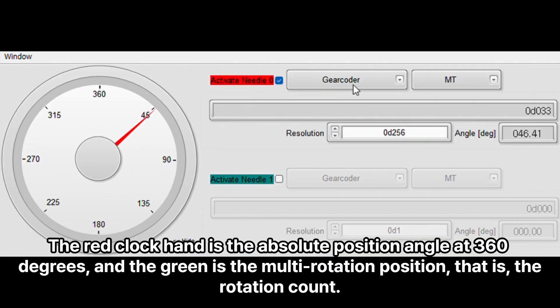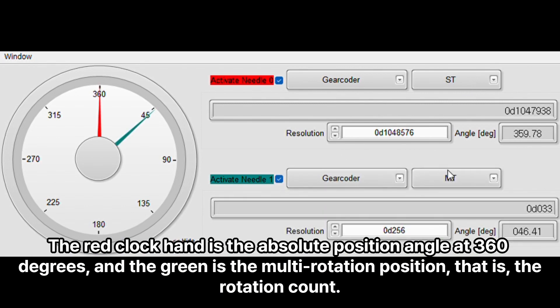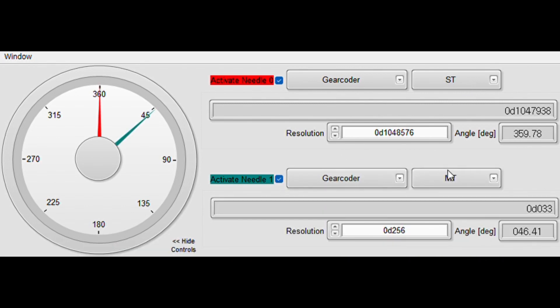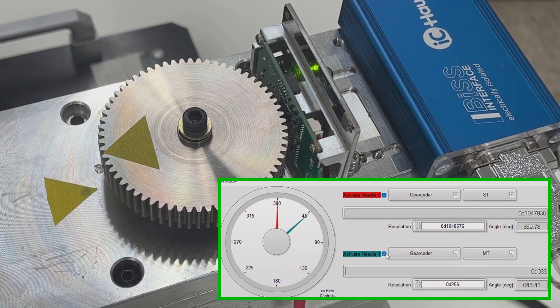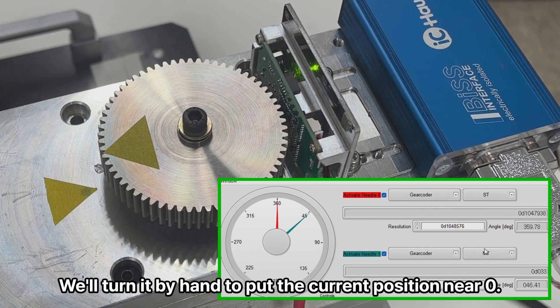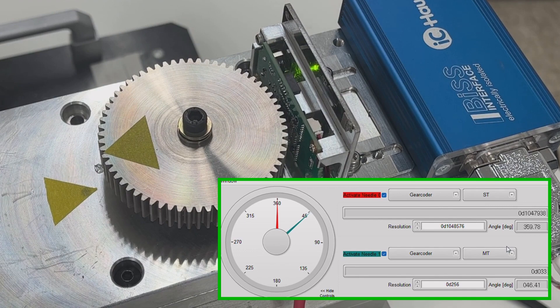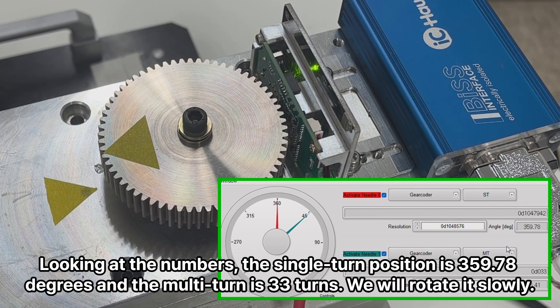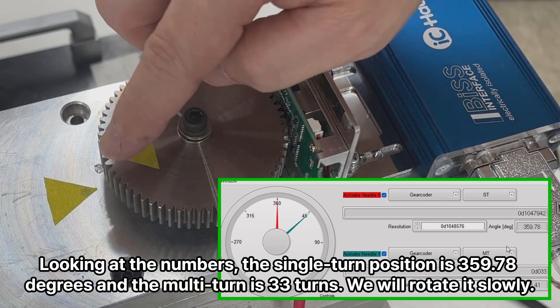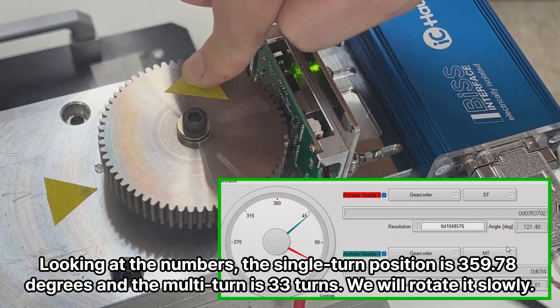The red clock hand is the absolute position angle at 360 degrees, and the green is the multi-rotation position, that is, the rotation count. We will turn it by hand to put the current position near zero. Looking at the numbers, the single turn position is 359.78 degrees and the multi-turn is 33 turns.